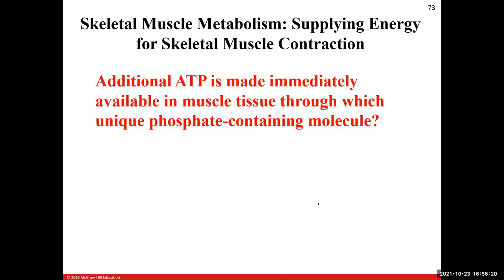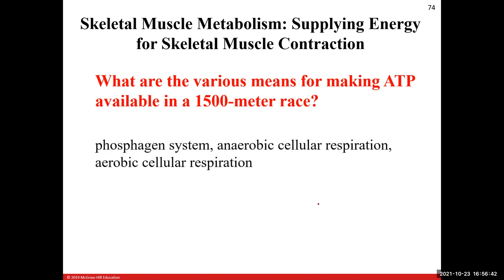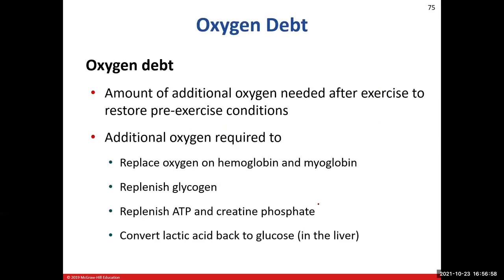Additional ATP is made immediately available in muscle tissue through creatine phosphate — a unique phosphate-containing molecule. For a 1500-meter race, we start with the phosphagen system, then undergo anaerobic cellular respiration via glycolysis, and then aerobic cellular respiration utilizing the mitochondria with oxygen, which is primarily what is used in that race.